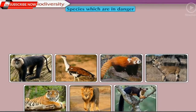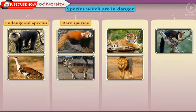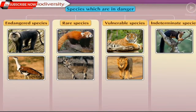Endangered species can be divided into four categories: endangered species, rare species, vulnerable species, and indeterminate species.